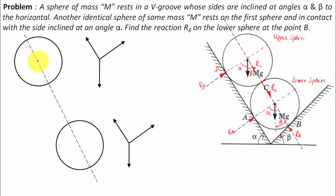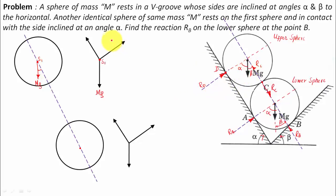Now, here is the center of the upper sphere — call it S1 — and here is the center of the lower sphere. The weight acting on the upper sphere is Mg, and on the lower sphere also Mg, since both spheres have the same weight. This angle here is beta, so I write angle beta.